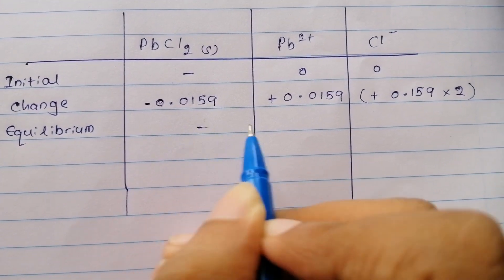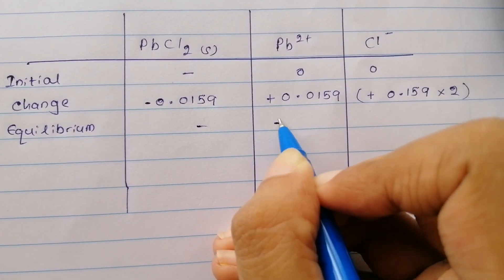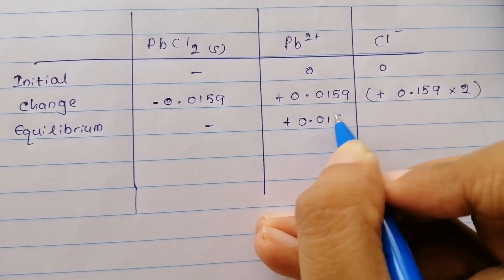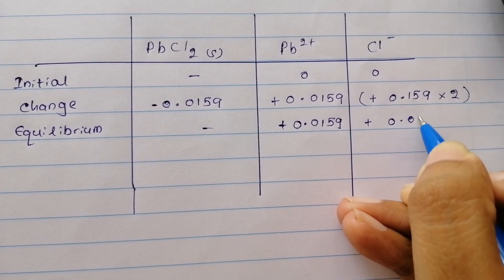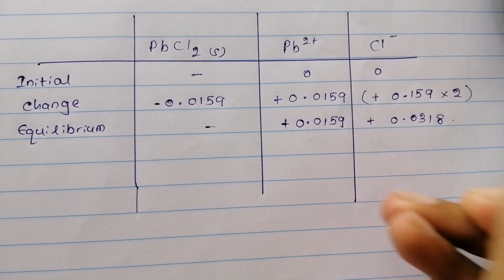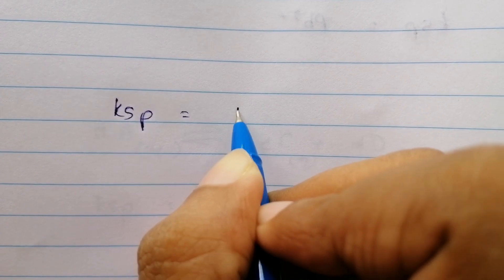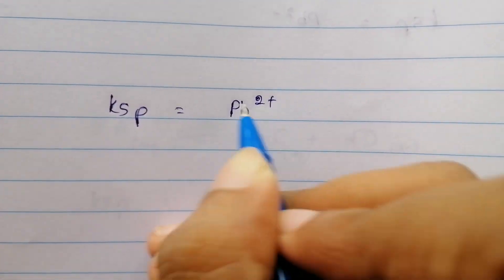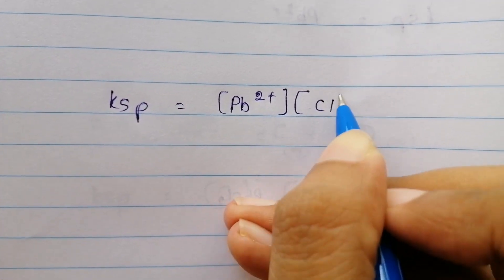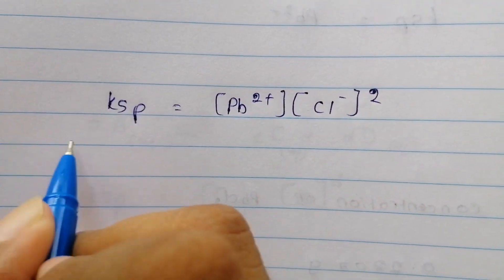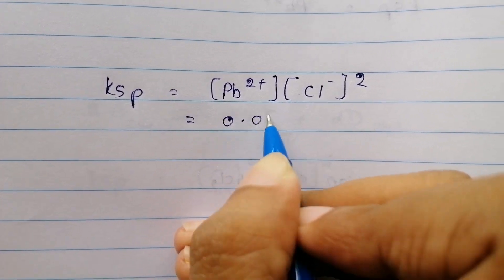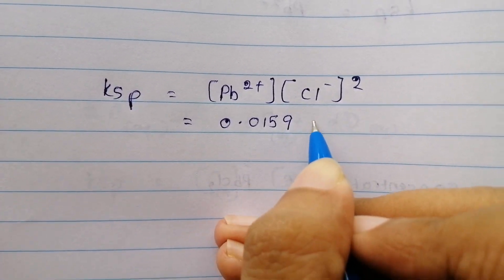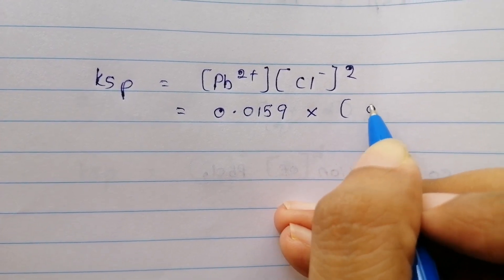We dissolve the lead chloride and determine the equilibrium concentration of each ion. You can see the chloride concentration substituted into the Ksp equation.